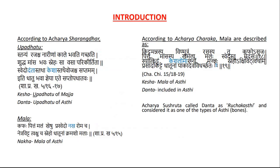Coming to the introduction: Kesh, Nakha, and Dant have been considered as either Upadhatu or Mala of Asthi dhatu. Acharya Charaq included Dant within Asthi, and Acharya Shushrut called Dant as Ruchak Asthi and included it as a type of Asthi.